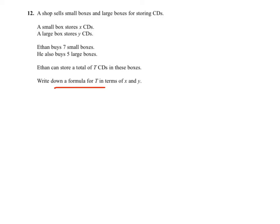Question 12. We need to write down a formula for T, which is the total number of CDs in terms of X and Y. What we know is that Ethan buys 7 small boxes and each box stores X CDs. So the amount of CDs in 7 small boxes will be 7X.